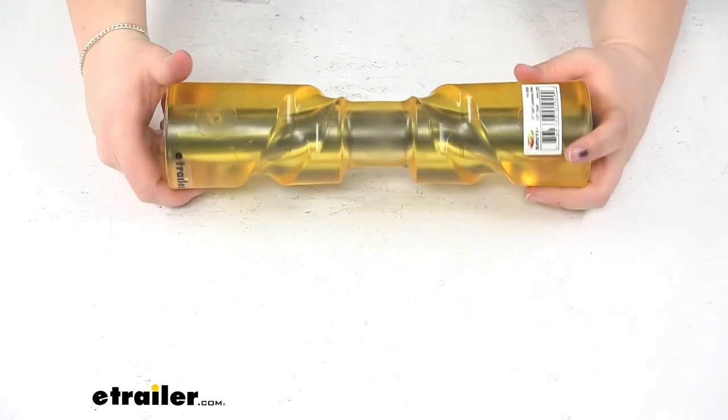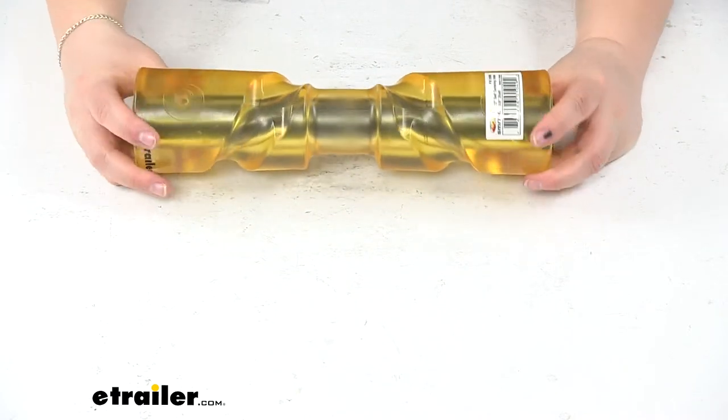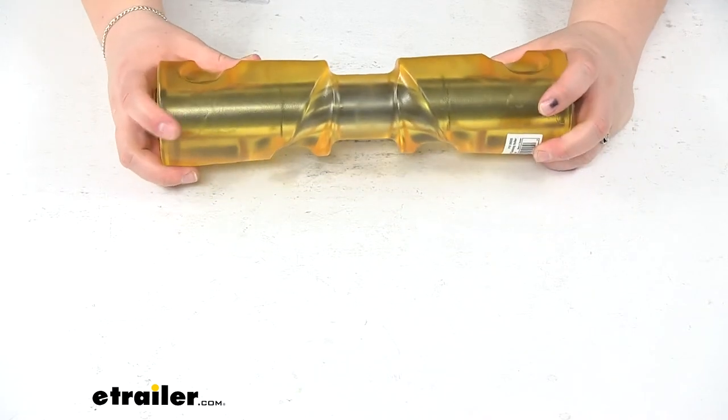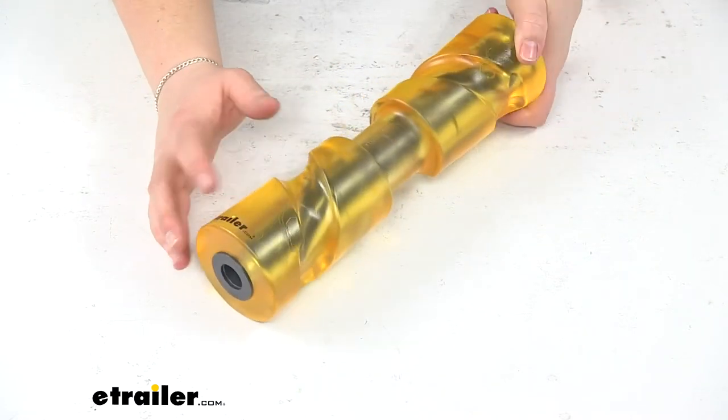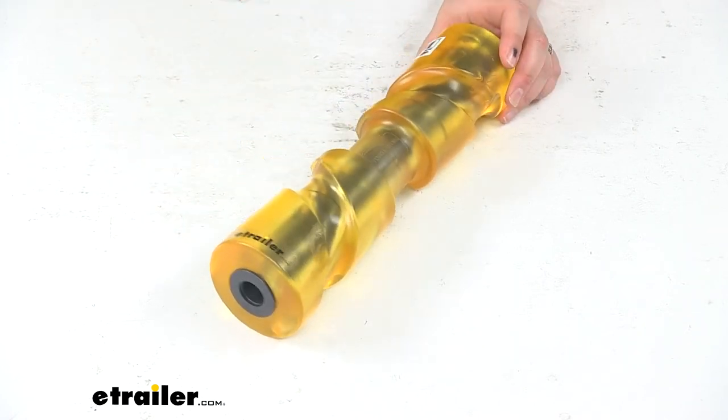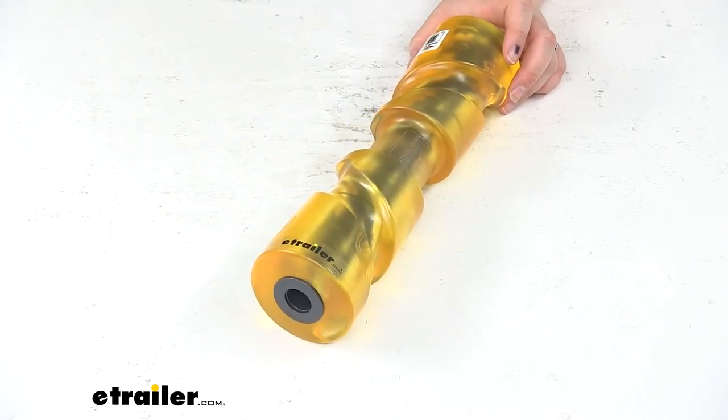This is going to make it a lot easier to load up your boat onto your trailer and it should with that PVC construction not cause any damage and again keep your boat protected from any road shock there. And that's going to do it for our look at the C.E. Smith keel roller for boat trailers.